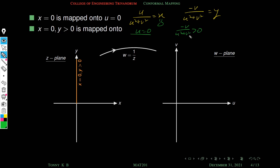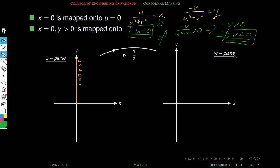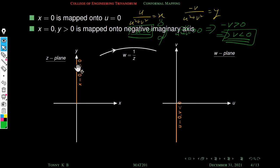With u = 0 and v negative, the image is the negative imaginary axis in the uv-plane. So the positive imaginary axis of the z-plane maps to the negative imaginary axis in the w-plane under w = 1/z.